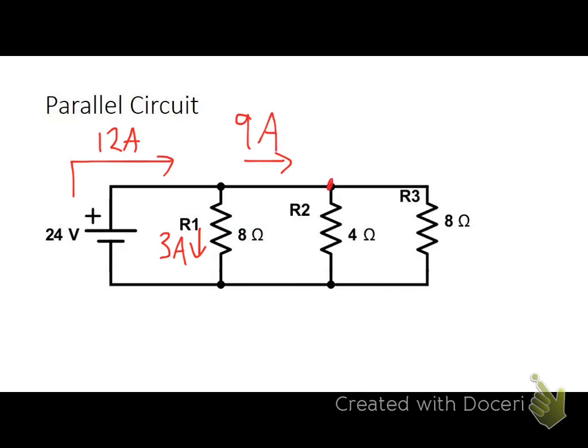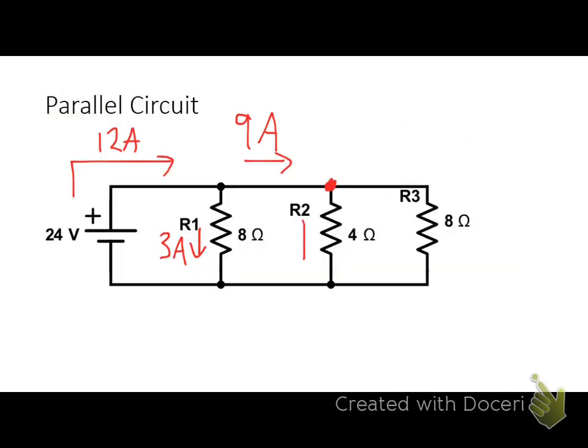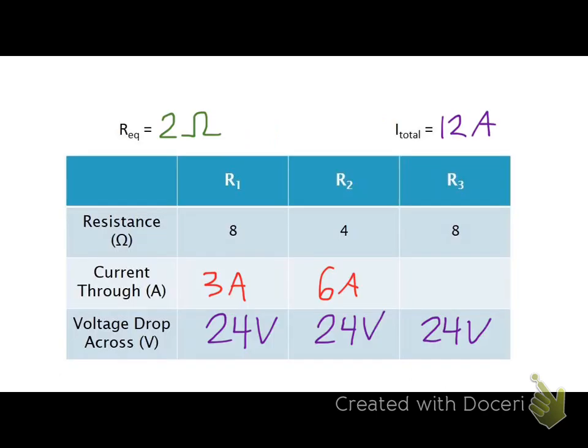But these nine amps run into another junction, so it's going to split off again. To figure out how much is going to go what way, I can use Ohm's law once again. 24 volts divided by 4 ohms is 6 amps. So 6 amps are going to travel down through R2, leaving only 3 amps to continue. Well, I hope that I end up with 3 amps when I divide 24 by 8. Oh, yes I do. Perfect. So that all checks out.